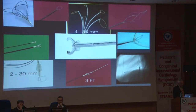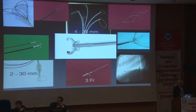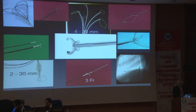This is what they would look like. There's the Ensnare, that's the Gooseneck — those are the commonest ones. This is the Maslanka biopsy forceps, and that's the Cochrane retrieval forceps. Those are by far the commonest ones that we tend to use.